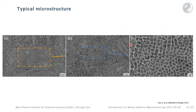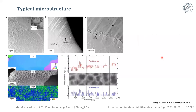Another unique microstructural feature in AM is what we call cellular structures or cellular dendrites. If the dendrites are growing parallel to the viewing plane, we see them as elongated rods, but if they are coming out of the plane, we see them as very spherical shapes. There are many people interested in these unique microstructures.